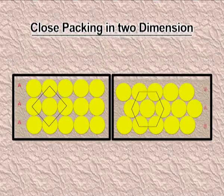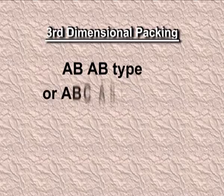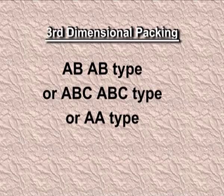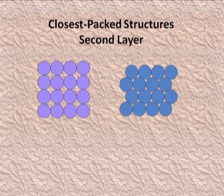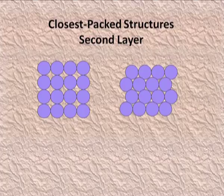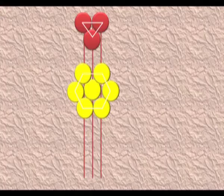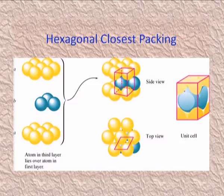To summarize two-dimensional packing: we have square close packing and hexagonal close packing. Now observe three-dimensional packing — ABAB type, ABCABC type, or AAA type. In the ABAB pattern you can clearly see the second layer sitting in the grooves of the first layer. This is hexagonal close packing — here you can very easily understand the packing from the pictures.